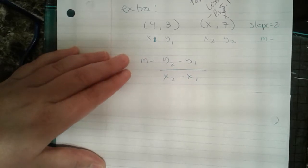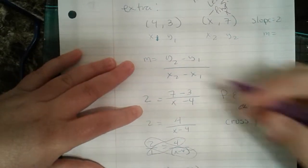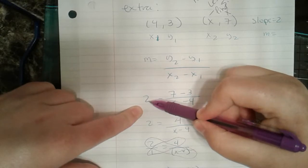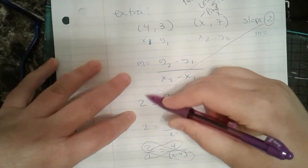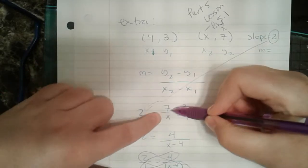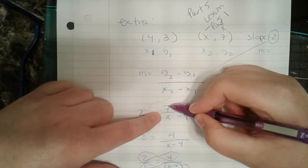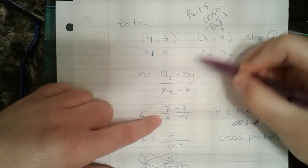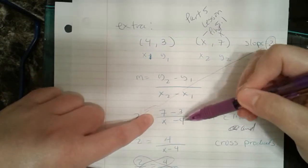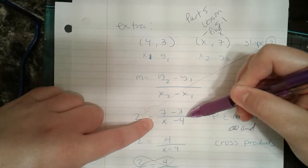We're going to plug in what we know. We're going to plug in 2 in for M because 2 is our slope. We're going to plug in 7 in for y2, 3 in for y1, x in for x2, and 4 in for x1.